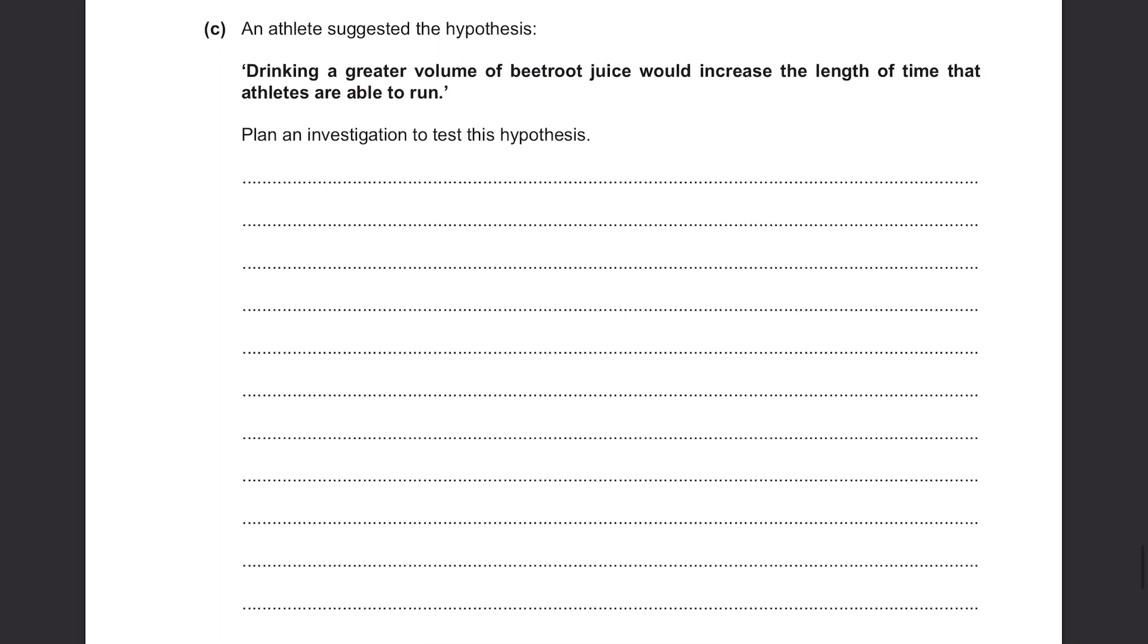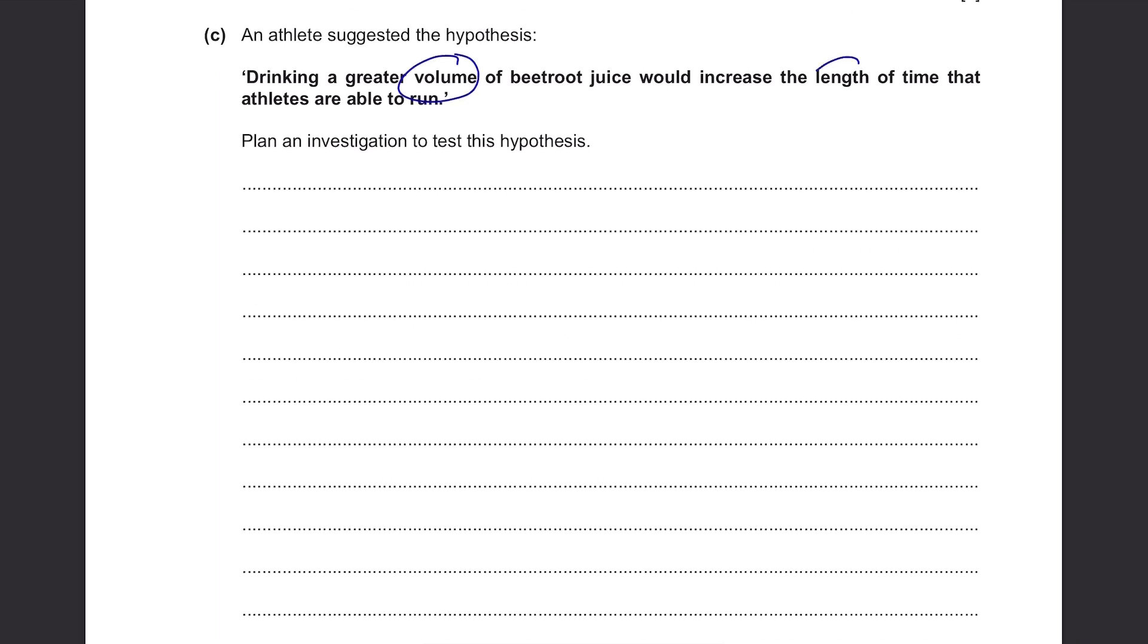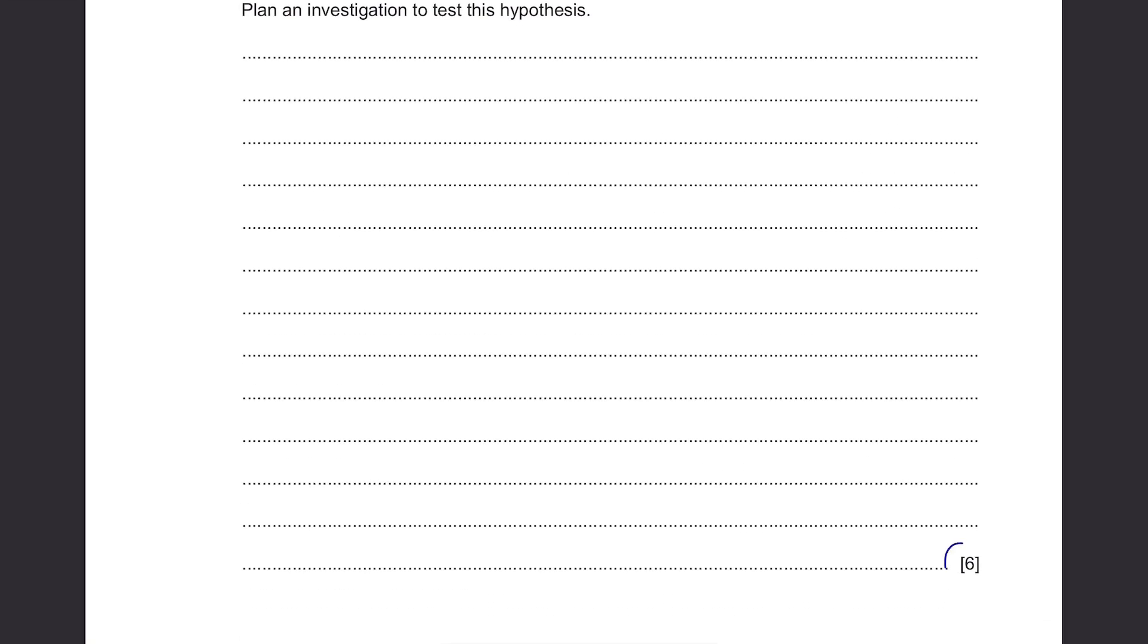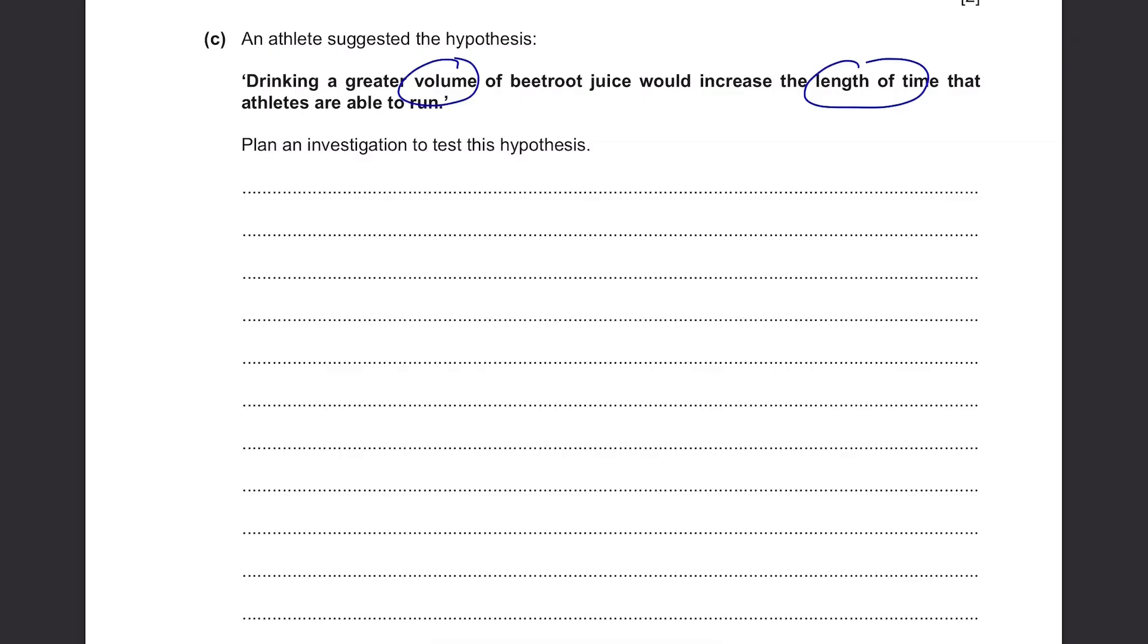Part C: An athlete suggested the hypothesis, drinking a greater volume of beetroot juice would increase the length of time that athletes are able to run. Plan an investigation to test this hypothesis. It's a 6 mark question, here it is. Well, just now we were talking about whether the beetroot juice would help the athletes to run faster, while it proved that it did. And this time we need to find out whether there is a relationship between the volume and the length of time. It's going to be pretty similar to the previous experiment. I'll go through them one by one. And don't worry, for biology paper 6, for this kind of questions, there are always more than 6 points that you can score from, so you can really get full mark for this. Alright, so since we are trying to find out if the volume affects the length, we should have different volumes of beetroot juice ready for the athletes to drink. You can write down random values for those, like 20 cm³, 40 cm³, 60, 80, 100, and so on. But there should be at least two different volumes.